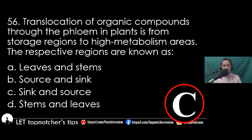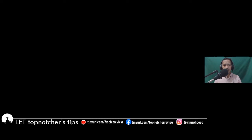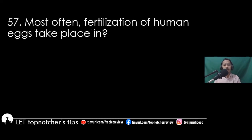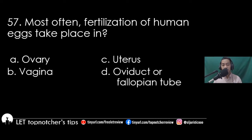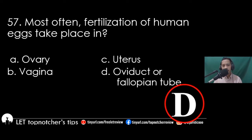Item 57: Most often, fertilization of human eggs takes place in the A) ovary, B) vagina, C) uterus, D) oviduct or fallopian tube. The best answer is letter D, oviduct or fallopian tube.